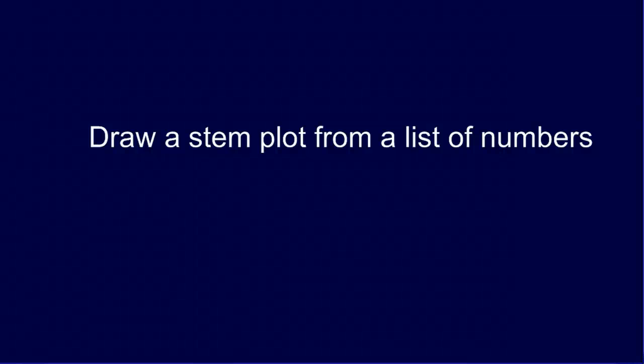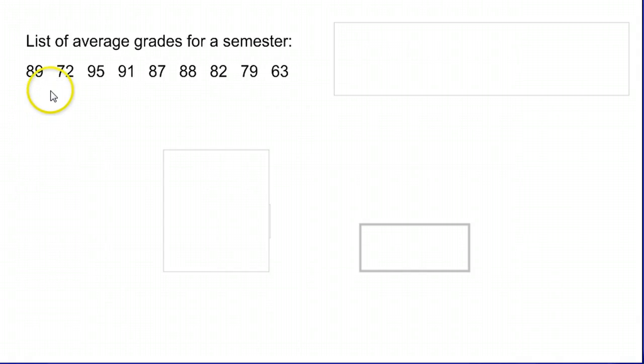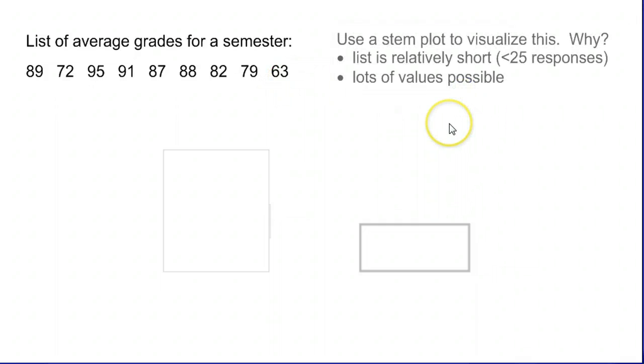Let's go ahead and draw a stem plot from a quantitative distribution. Here is a bunch of average grades for a semester, so let's imagine we collected data from a bunch of students and these are the different grades they had for their semester. Whenever you have a relatively short list, let's say maybe 25 numbers or less, not a hard and fast rule but generally will work, and you have lots of different values that are possible...